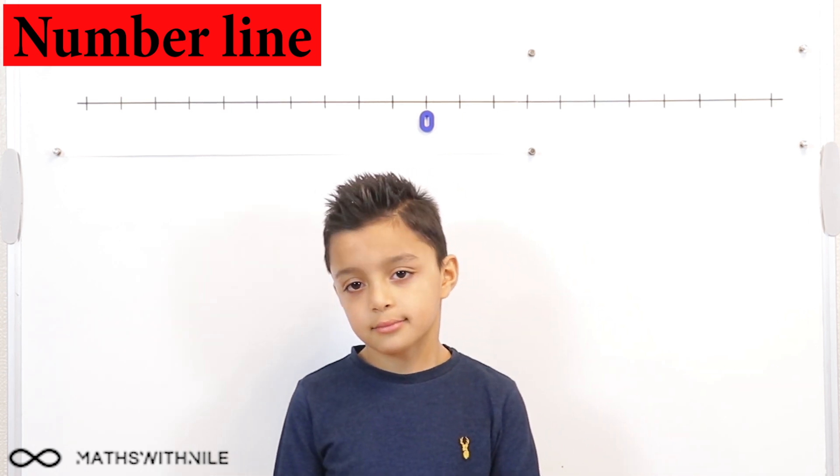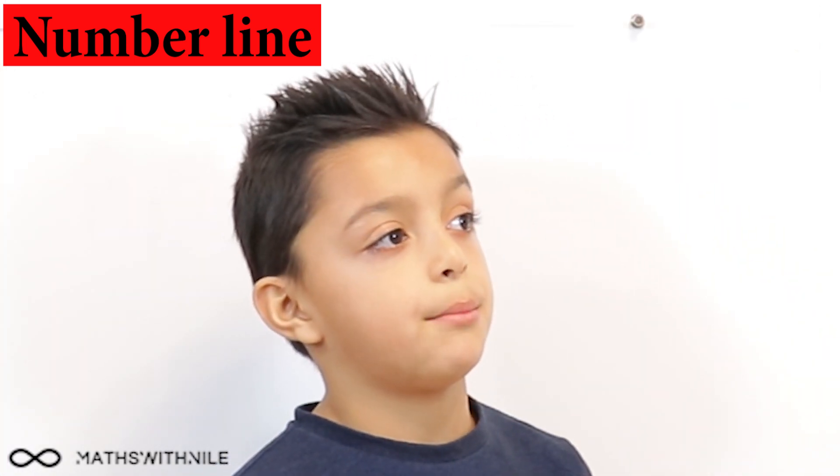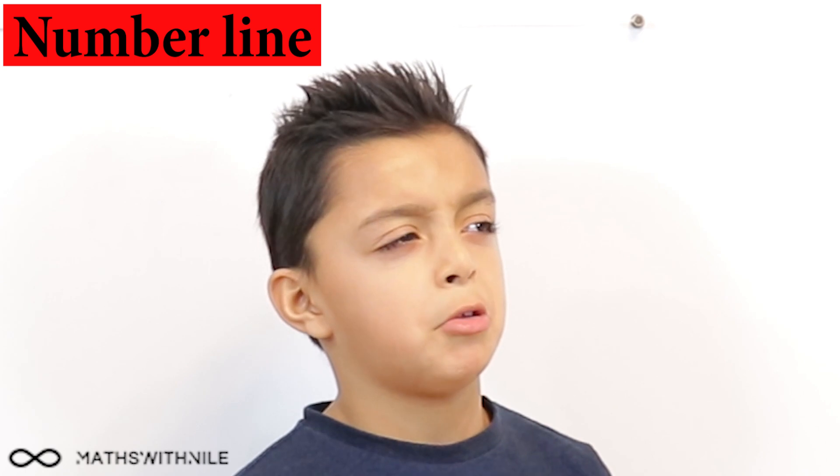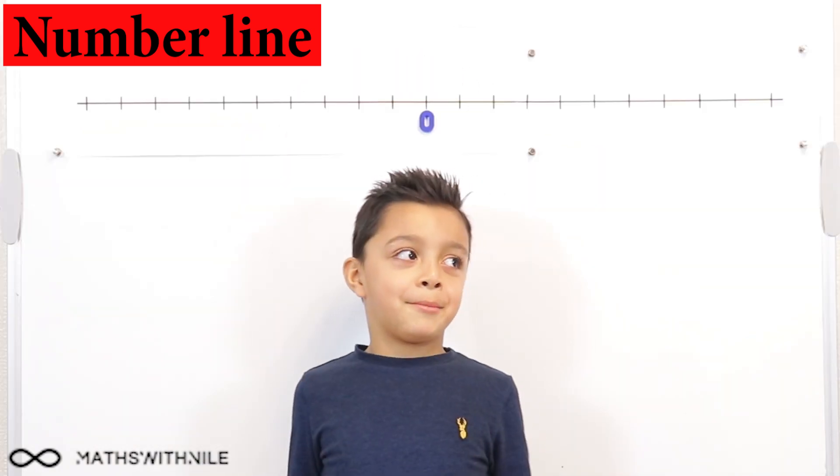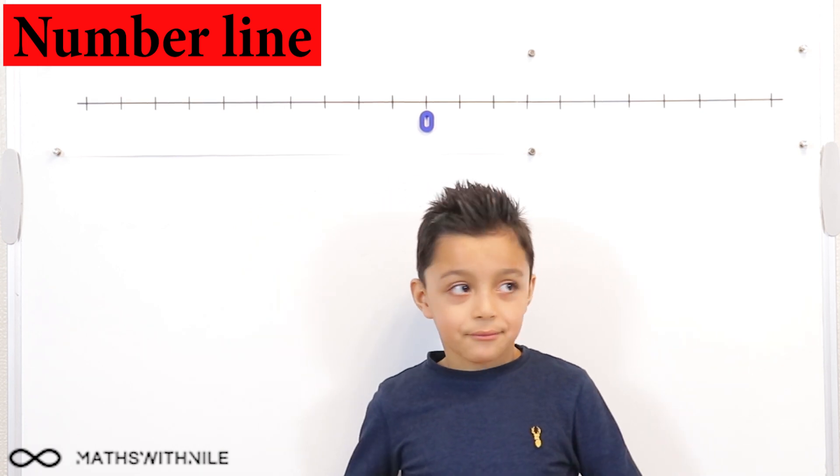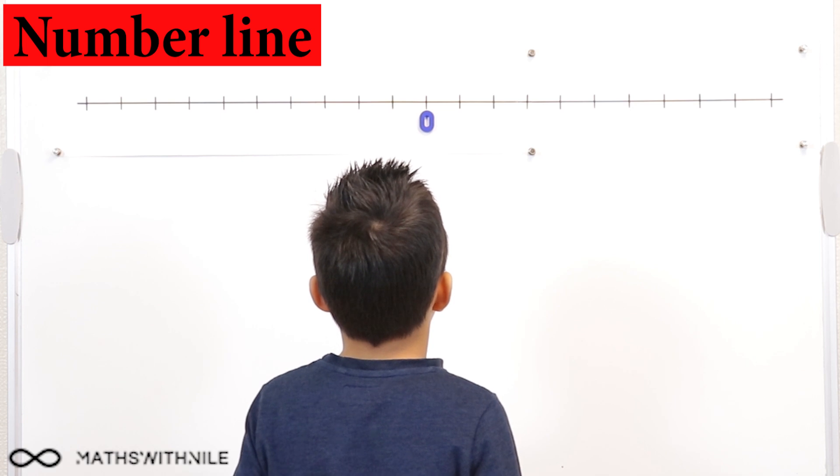Okay, and you mentioned negative numbers, but we're also going to have what other type of numbers? Numbers above zero? Positive numbers. And you've got one number labelled there. What's that number that you have? Zero.